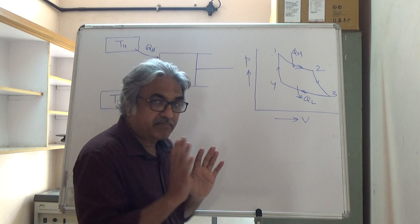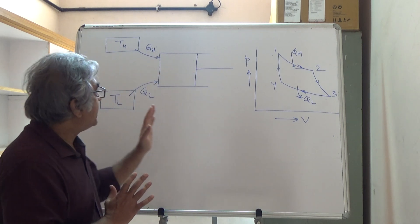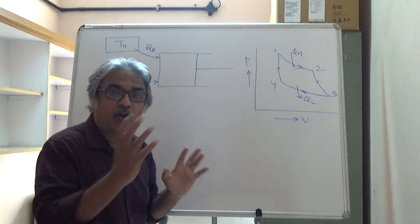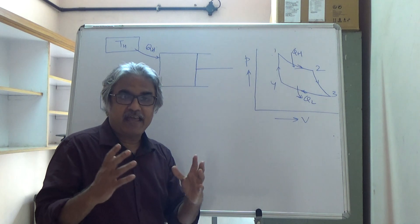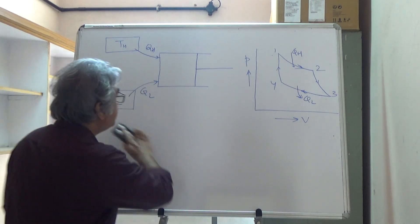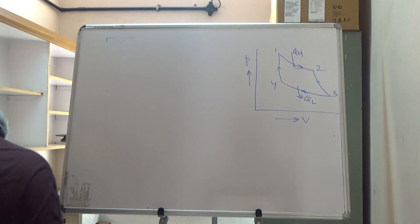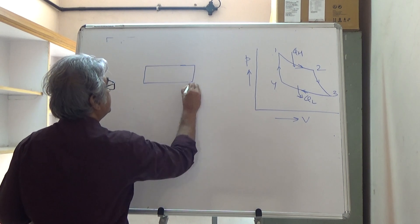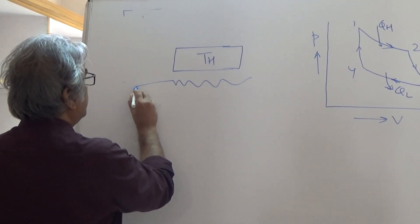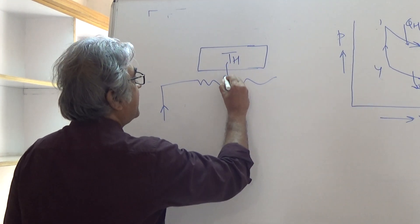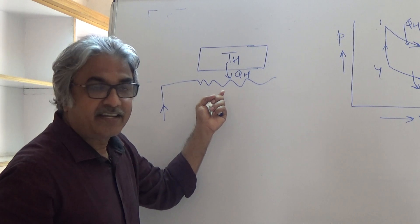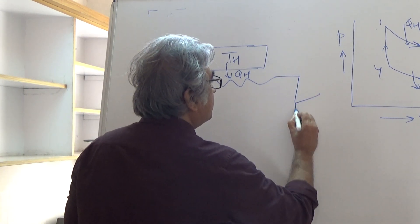I need to tell you that the engine which we have drawn here is a non-flow process — the working substance is not flowing. But one could imagine a Carnot engine for a flow process as well. For example, I could replace this piston-cylinder arrangement with a heat exchanger through which the fluid is flowing. The source temperature is TH, heat QH is transferred to the fluid, and the temperature of the fluid flowing through this is also TH because we want reversible heat transfer.